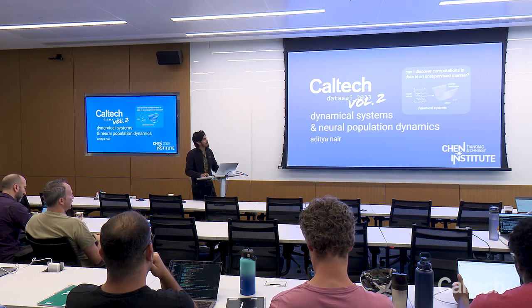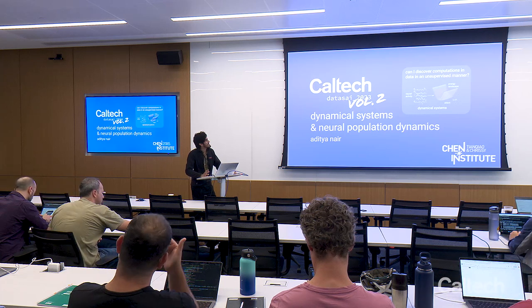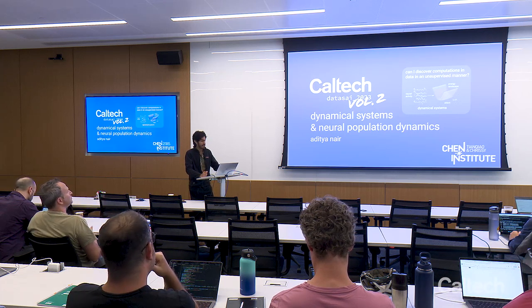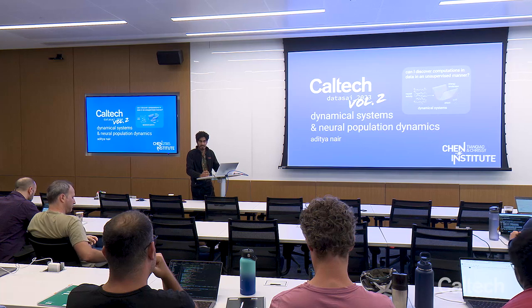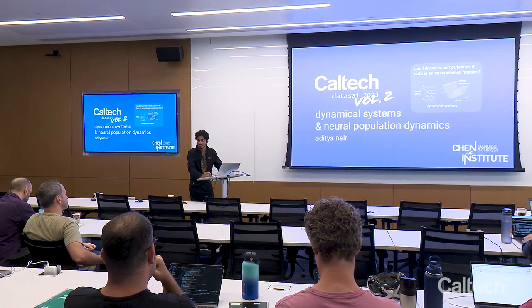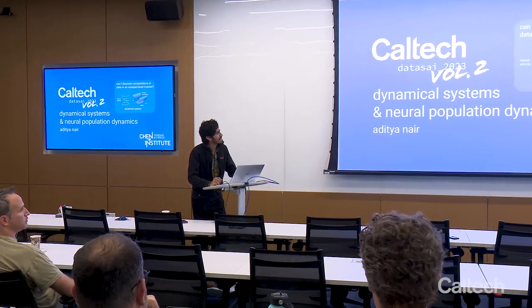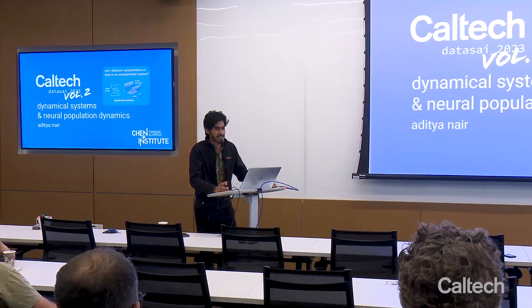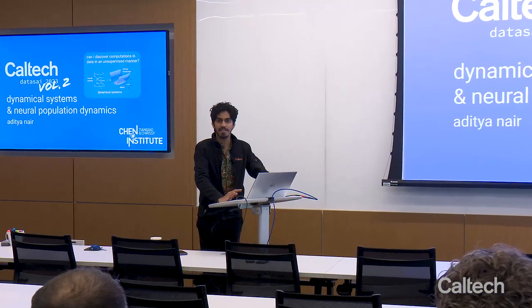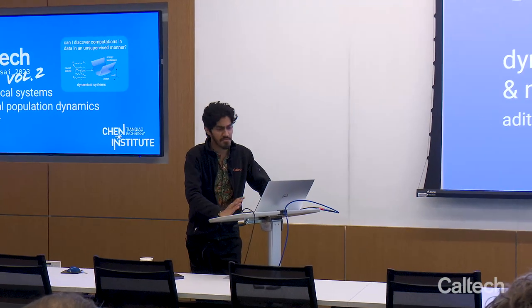We're going to talk about a theme that's really close to my heart. It's about dynamical systems and how there's been a trend towards thinking of neural activity as a dynamical system, and approaches to fit models to neural data. This is not just something happening in neuroscience—it's happening across different fields. There's some really cool work by folks like Steve Brunton and Hugh Washington, who think of this as the system identification problem.